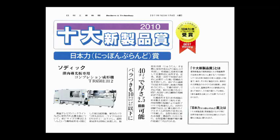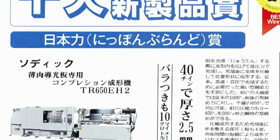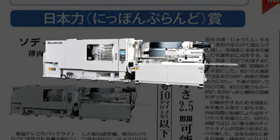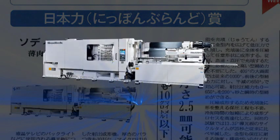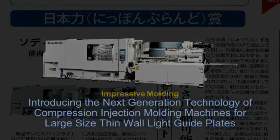We would like to introduce the next generation technology of compression injection molding machines for large size thin wall light guide plates, which won the world-class Japan Brand Award at the 53rd Best 10 New Product Awards.